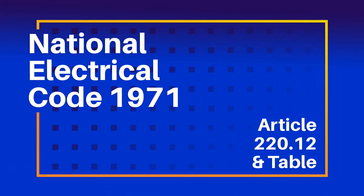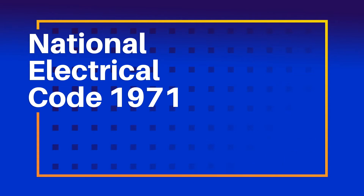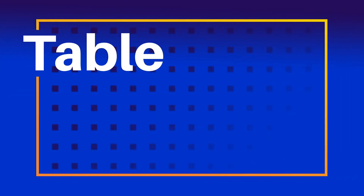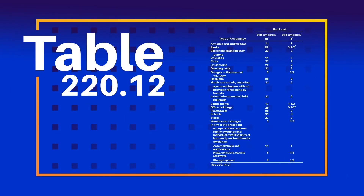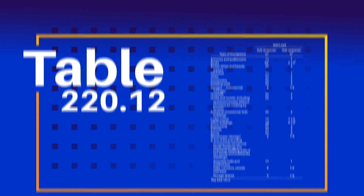Section 220.12 and its accompanying table were first introduced in the 1971 NEC, and they provided general lighting load values for specific occupancies. Occasional revisions were made over the years to a few occupancies.